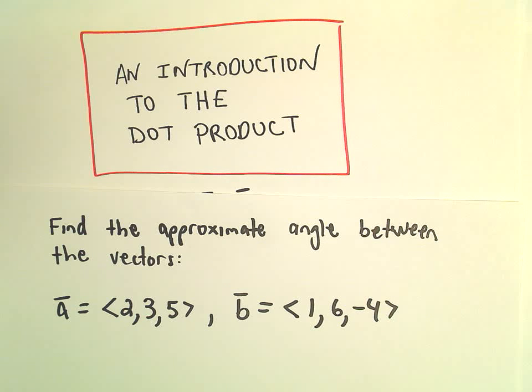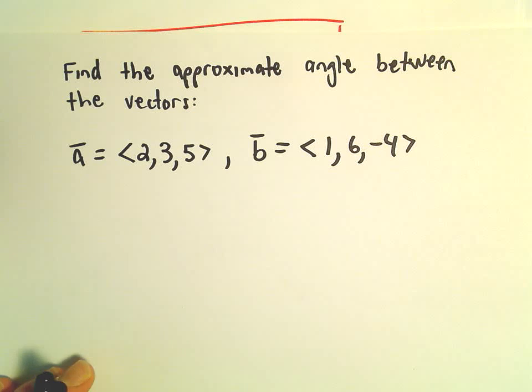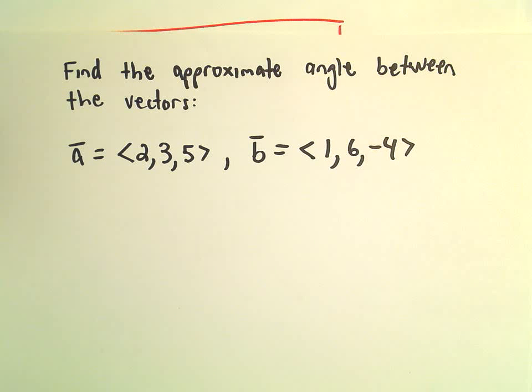Alright, so another example here, finding an angle between vectors. Vector A here has components 2, 3, 5. Vector B has components 1, 6, negative 4.